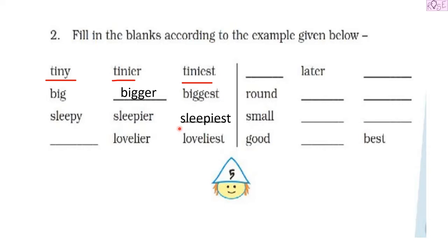Next we have 'lovelier' and 'loveliest.' They have given us the superlative degree 'loveliest' and the comparative degree 'lovelier.' We have to find the positive form, which is 'lovely.' Notice that whenever we have 'y' at the end of an adjective, we change it to 'i-e-r' in the comparative form and 'i-e-s-t' in the superlative form. So: lovely, lovelier, loveliest.